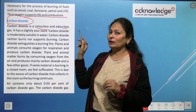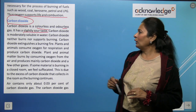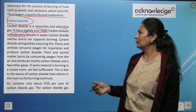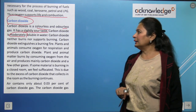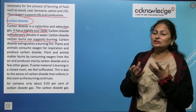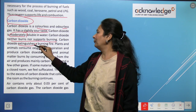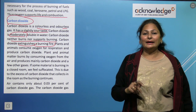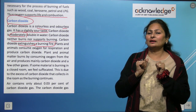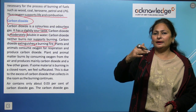Carbon dioxide is colorless and odorless, but it is slightly sour in taste. It is moderately soluble in water. Carbon dioxide neither burns nor supports burning. In fact, carbon dioxide has the property of extinguishing a burning fire — fire extinguishers release carbon dioxide in white powdery form to cover and smother fires.